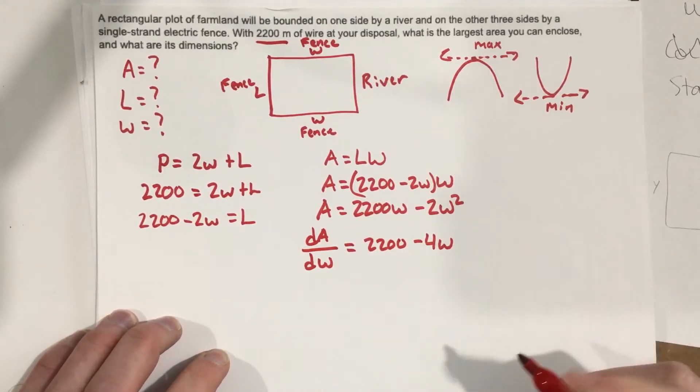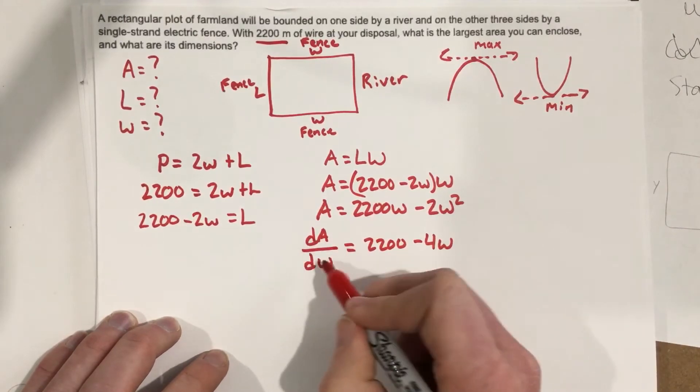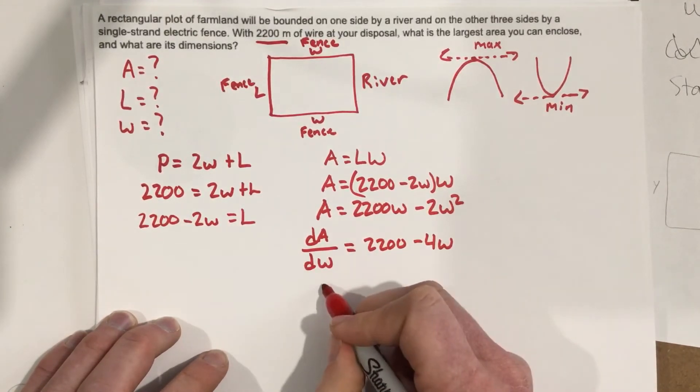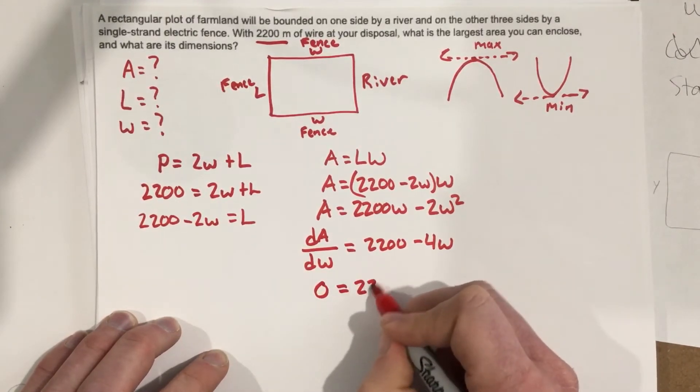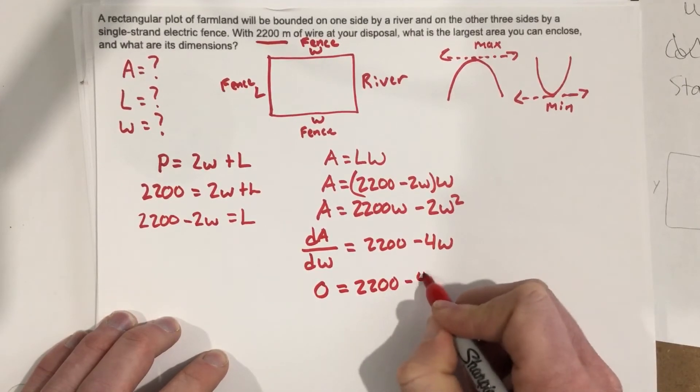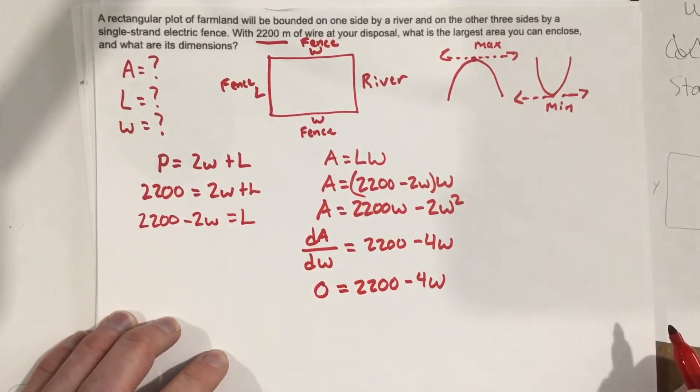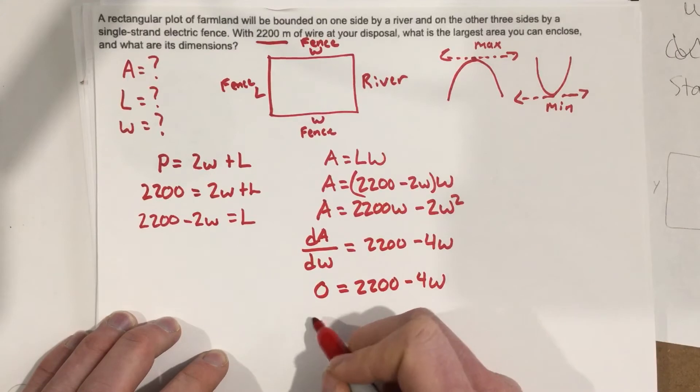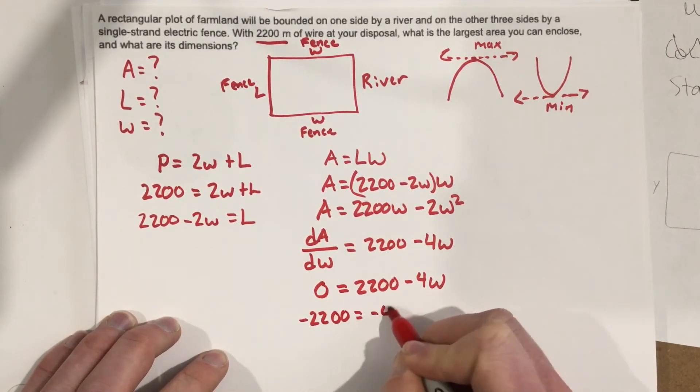Now, what do we do next to find our maximums? We set the derivative equal to 0, so we're going to say 0 equals 2200 minus 4W. Subtract the 2200 over, you get negative 2200 equals negative 4W.